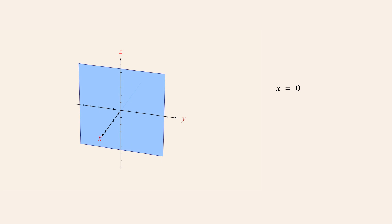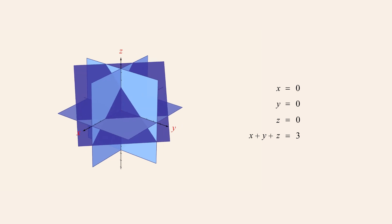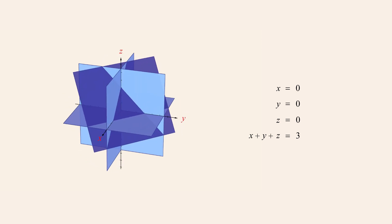Consider a system containing the equations x equals zero, y equals zero, and z equals zero. This system has a single unique solution corresponding to the common point at the origin shared by all three planes. Now let's add a fourth equation: x plus y plus z equals three. Since this fourth plane does not include the single point shared by the other three planes, there is no point common to all four planes. This system is therefore inconsistent even though it contains no parallel planes or triangular tubes.